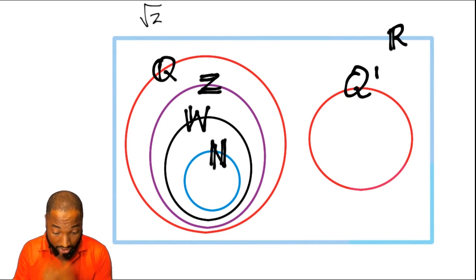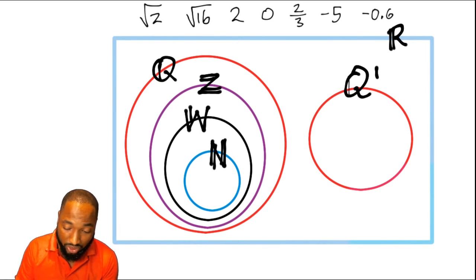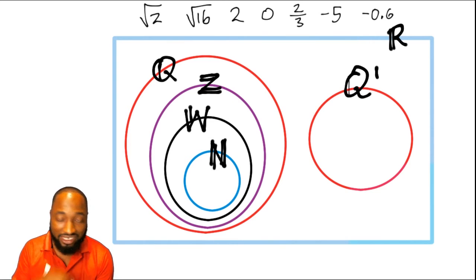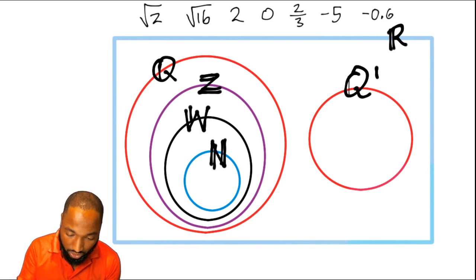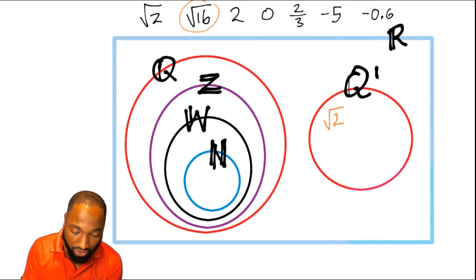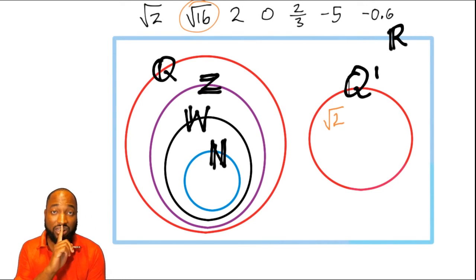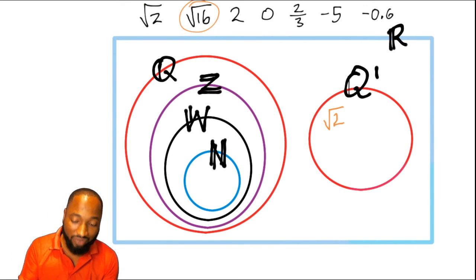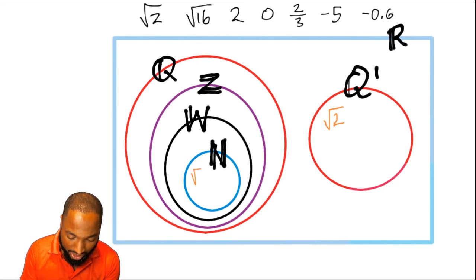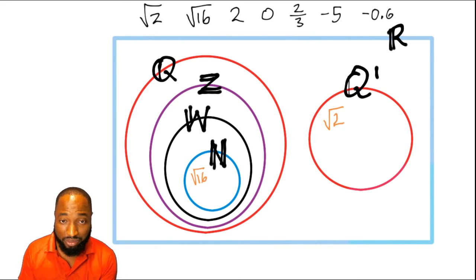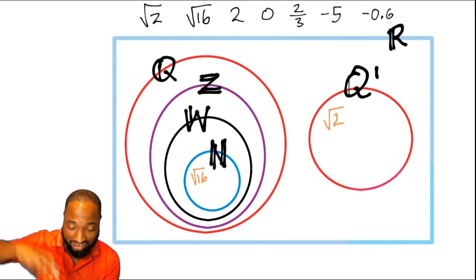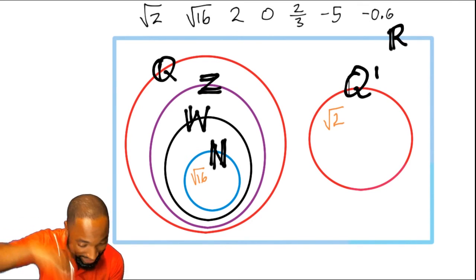So I drew it before and now we're going to stick in those numbers into the diagram. Square root of 2 is an irrational number. Square root of 16, however, is not an irrational number because you can find the square root of 16 is 4. That happens to be a natural number. 4 could fit in right down in the center there.